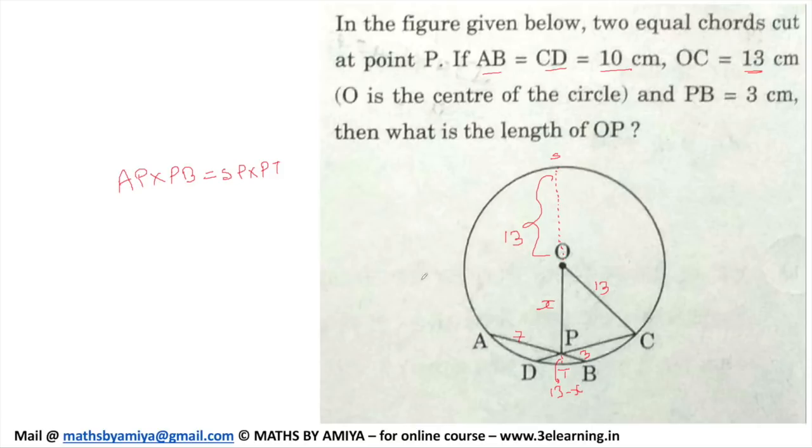So we have AP, which is nothing but 7, PB nothing but 3, SP is nothing but 13 plus X, and we have PT is nothing but 13 minus X.